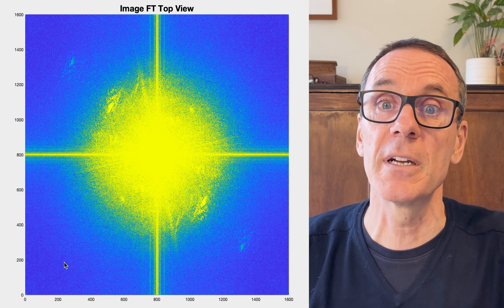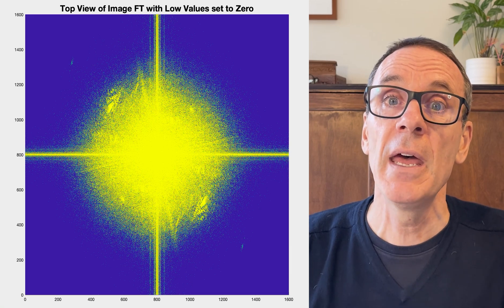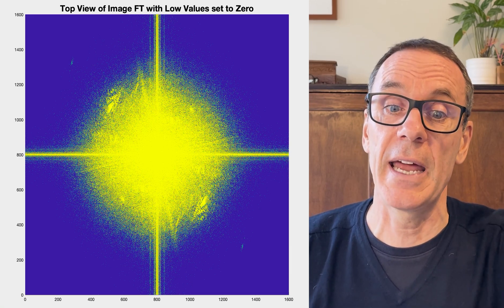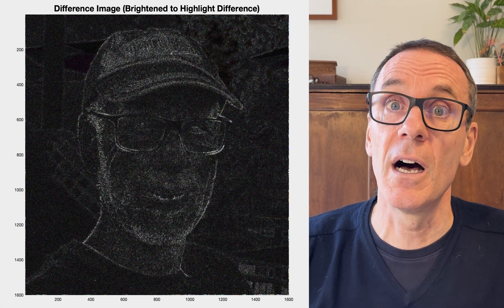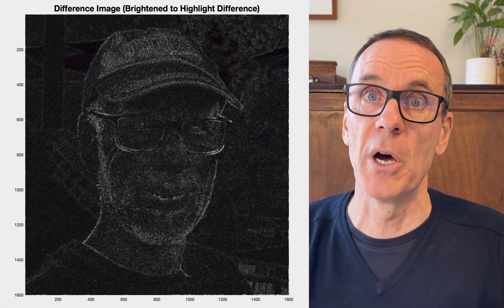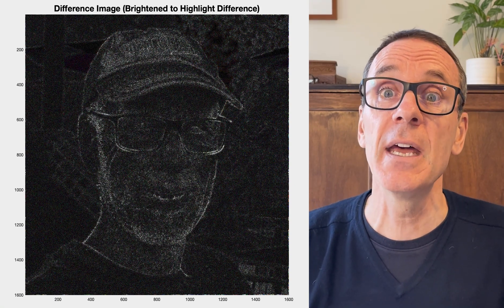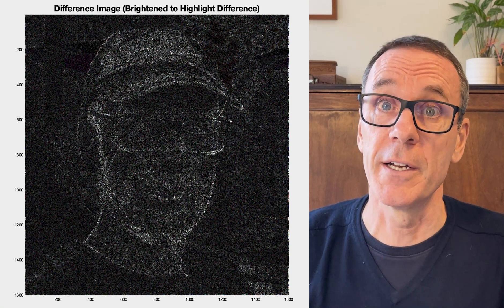To test this out, I'm going to set all of those values that are less than 50 to zero. And if we go back to the image domain, let's see what effect that had on the image. Here's the image you get — really, there's no discernible difference. I'm showing a highlighted version of the actual difference between the original image and the one that had all those frequency domain components zeroed out, and there is a difference, but it's really not very much in terms of actual pixel values.